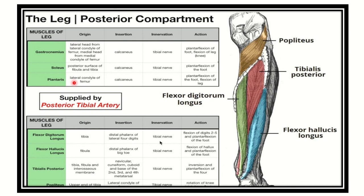The lower box shows the deep posterior compartment muscles. In this compartment there are different muscles such as flexor digitorum longus, flexor hallucis longus, tibialis posterior, and popliteus. The popliteus is located very close to the popliteal region. These four muscles — tibialis posterior, flexor digitorum longus, flexor hallucis longus, and popliteus — form the deep group of the posterior compartment.